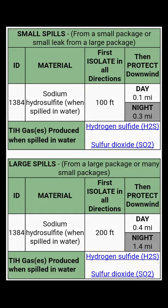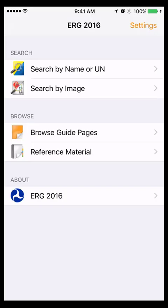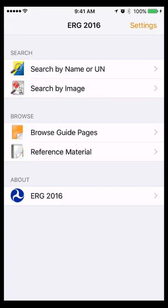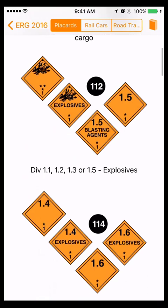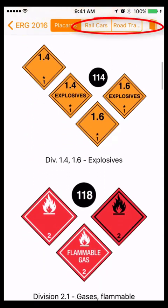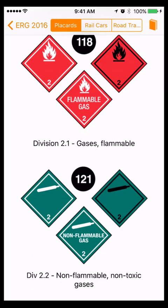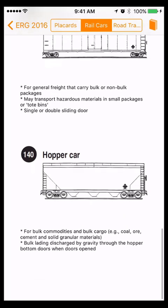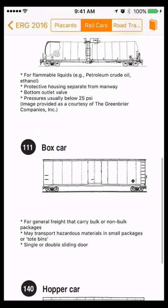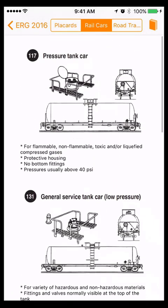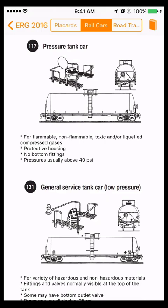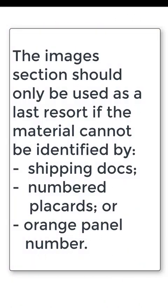Now we'll talk about searching by image. From the home screen, touch Search by Image to identify placards and rail car or road trailer images. Look for placards first. If no placards are visible, touch to view rail car or road trailer images as a last resort. If you see an image that matches the one at your accident site, touch it and the associated guidebook page will open. The images section should only be used as a last resort if the hazardous material cannot be identified by shipping documents, numbered placards, or orange panel number.